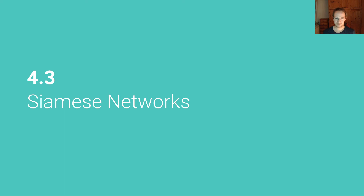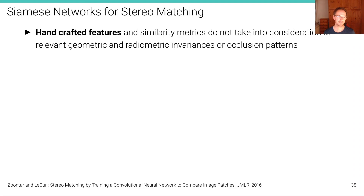While in the previous unit we talked about very simple handcrafted similarity metrics, this unit is about learning similarity metrics from data using the power of deep neural networks. The motivation is that handcrafted features and similarity metrics do not take into account all relevant geometric and radiometric invariances or occlusion patterns. It would be beneficial to learn all of this from data, as deep learning has revolutionized recognition — where handcrafted SIFT descriptors were used before, now all features are actually learned.